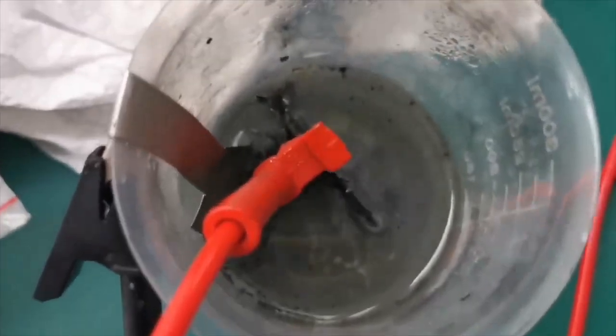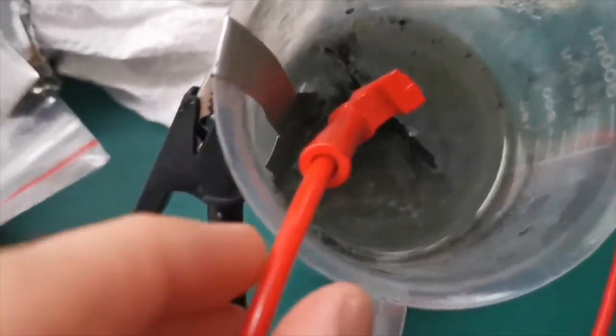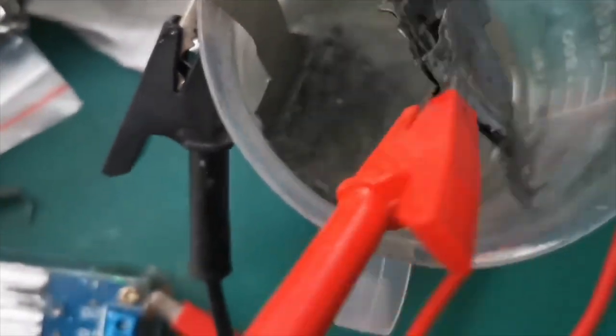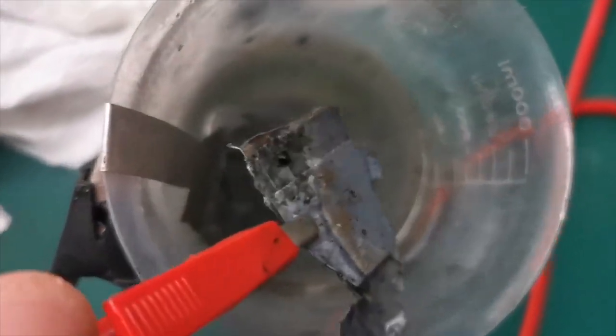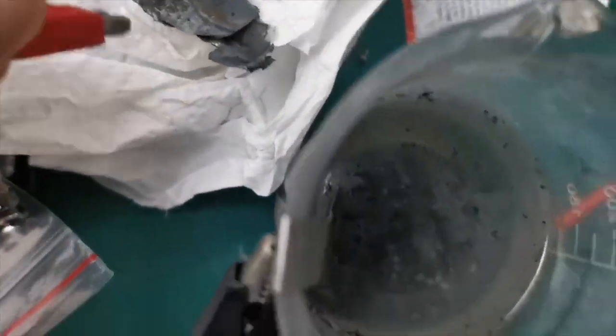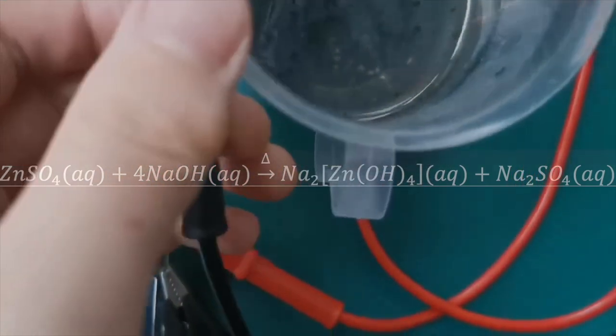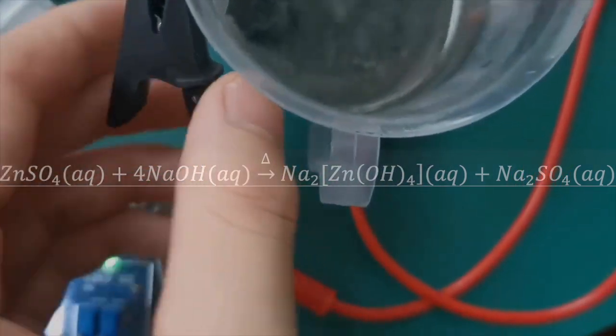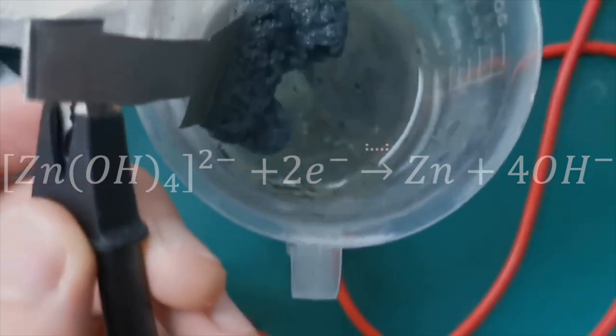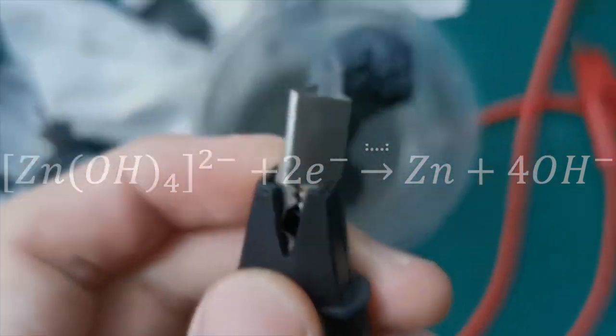All right, we are back around 30 minutes later and you can see that the zinc anode has decreased a lot in size, meaning that it has been corroded. On the anode, the zinc gives away electrons and dissolves into the solution as tetrahydroxyzincate ions. The ion can also be generated if you directly add zinc salts to an excess of sodium hydroxide. The ion then gets reduced on the cathode to form pure zinc metal.